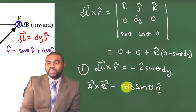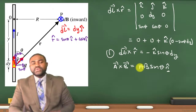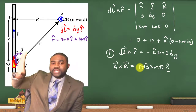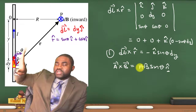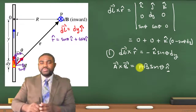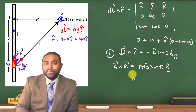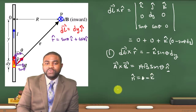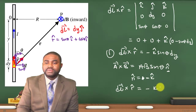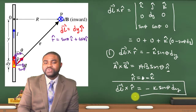where n̂ is a unit vector perpendicular to both a and b. Using the right-hand rule, if you place your right hand extended in the direction of dl and curve your fingers towards dr, the unit vector n̂ is equal to negative k̂. Therefore, dl cross r̂ is equal to negative k̂ sinθ dy, just as before.